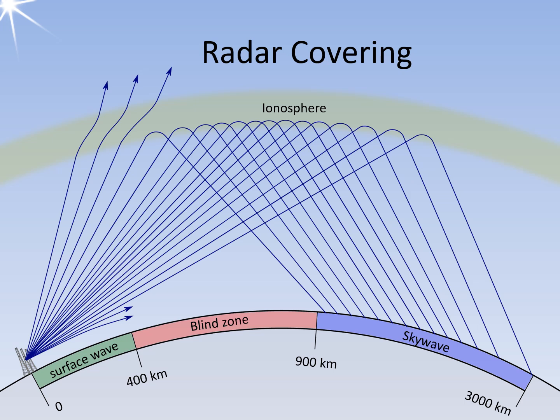In radar images, coastlines are always identifiable. Thus, the radar image can be adjusted in scale until these coastlines align with electronic mapping data. This ensures that the positions of ships, boats, and low-flying aircraft are accurately represented.